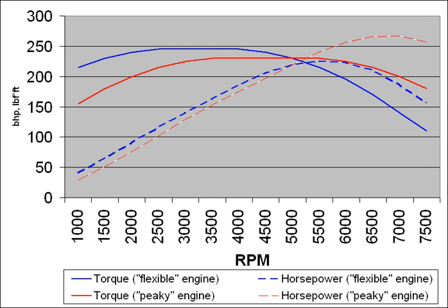By careful gear selection, an engine can be operated in its power band throughout all vehicle speeds. Such use prevents the engine from labouring at low speeds or exceeding recommended operating speeds. A narrow power band is often compensated for by a power splitting device such as a clutch or torque converter to efficiently achieve a wide range of speeds. A continuously variable transmission can also avoid the issues of a narrow power band by keeping the engine running at an optimal speed.